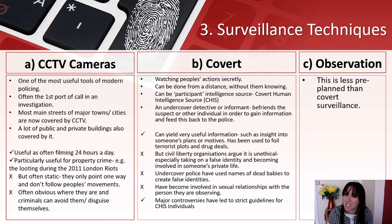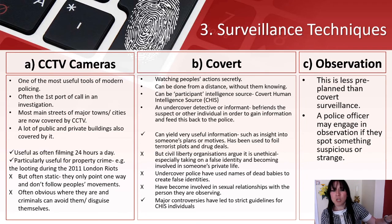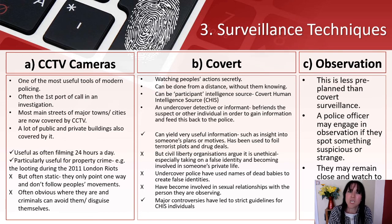Observation is less planned than covert surveillance. A police officer may engage in observation if they spot something suspicious — they see somebody who looks a bit dodgy, follow them, and watch to see how events develop. They remain close and observe. This is quite common — police spot something suspicious and simply observe. That's a very common thing.